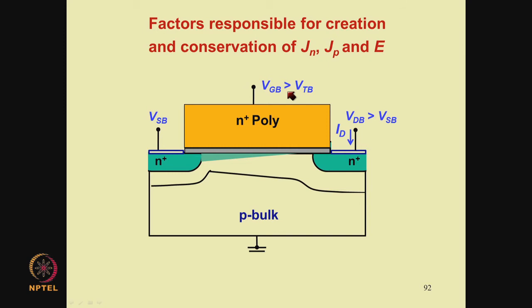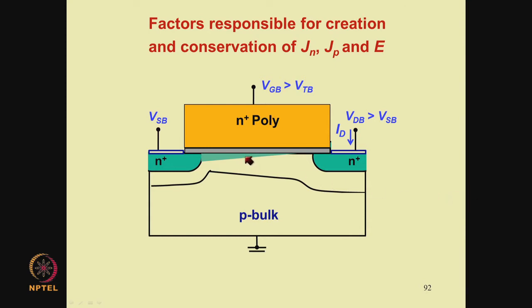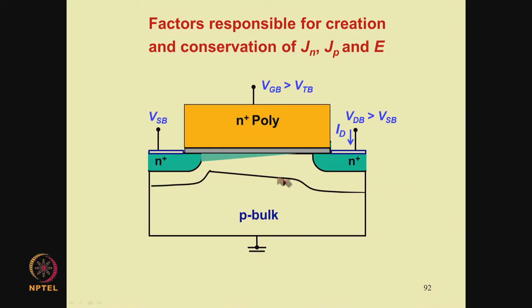In superthreshold, that is when VGB is greater than VTB, the inversion charge in the MOSFET is large. There is an electric field from drain to source, therefore there is a drift current and there is a gradient of the inversion charge from source to drain, therefore there is a diffusion current as well. When VGB is greater than VTB, inversion charge is significant, and therefore the drift current is large and dominates over the diffusion current. The drift current depends on the inversion charge and is proportional to the charge, whereas the diffusion current is proportional to the gradient of the charge. So because the charge itself is large, the drift current dominates.